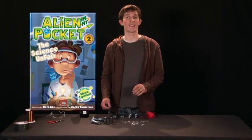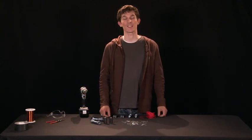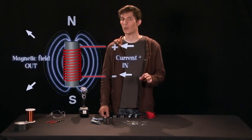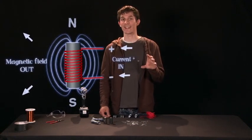In the second book, The Science Unfair, Zach, the protagonist, has to build something for his science fair project. He chooses an electromagnet for the project, and with the help of his four inch tall alien friend named Amp, he builds quite an electromagnet.